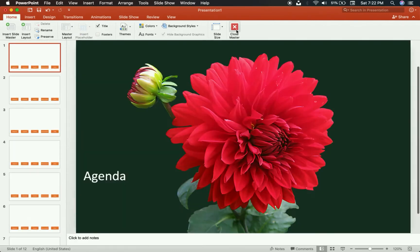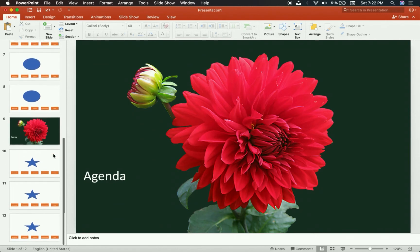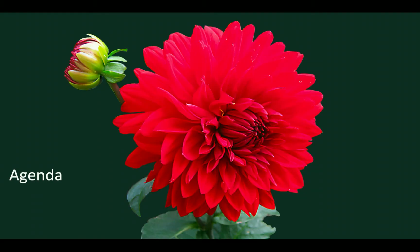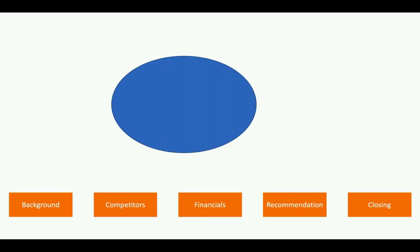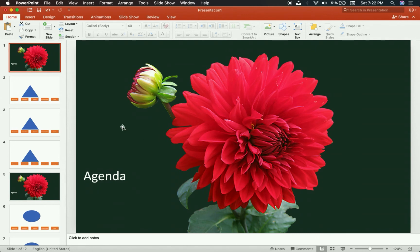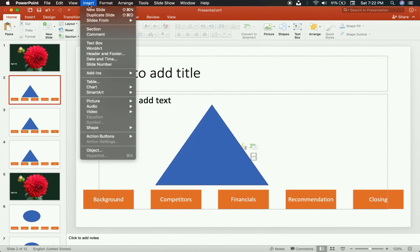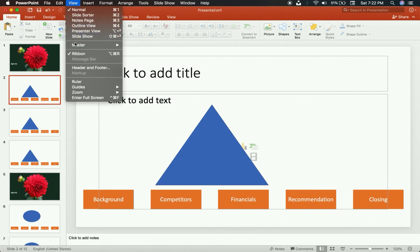You'll notice that what I've done has affected all the templates and layouts. If I close the Slide Master, there they all are. So when I'm running through my presentation, here's Section 1, back to the agenda, Section 2, and Section 3. But now we have to make sure that when we're in Section 1, Section 1 is highlighted — so when we're in the background section, Background is highlighted, because everyone knows triangles mean background.